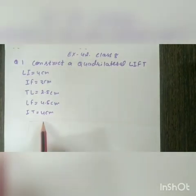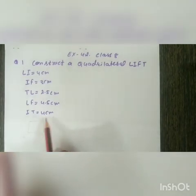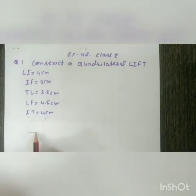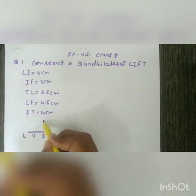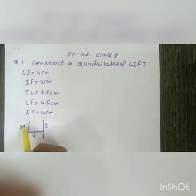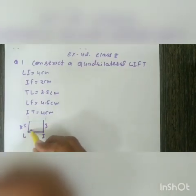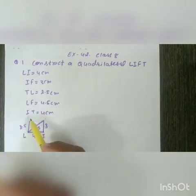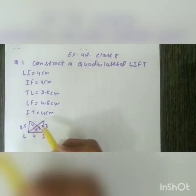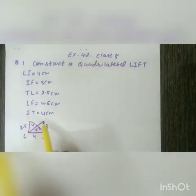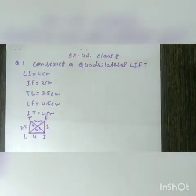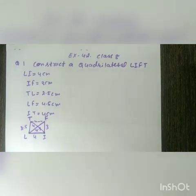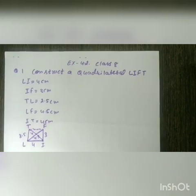First of all, we will draw a rough sketch of quadrilateral LIFT. LI is 4 cm, IF is 3 cm, TL is 2.5 cm, LF (the diagonal) is 4.5 cm, and the other diagonal IT is 4 cm. That means we are given three sides and two diagonals. One side, TF, is not given — I have marked it with a dotted line.